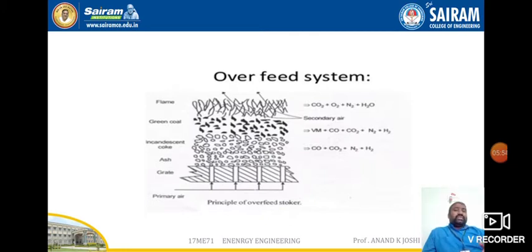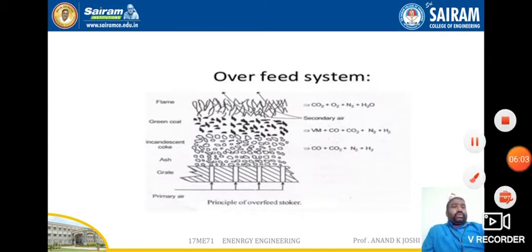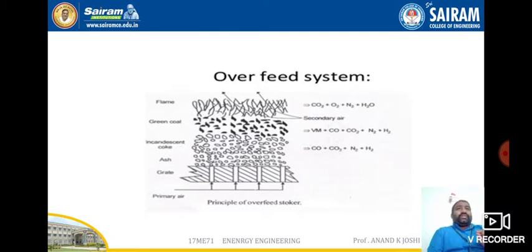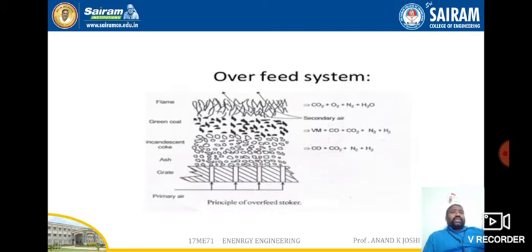Now let us discuss about the overfeed system. In this overfeed system, coal of different sizes and shapes is fed into the system. In the overfeed system, coal is fed into the grate above the point of air admission. This is used for large capacity boilers where pulverized coal is used. The combustion mechanism of an overfeed stoker works as follows: air from the fan, along with water vapor from the atmosphere, enters the bottom of the grate under pressure. As air passes through the grate, it absorbs heat from the ash and the grate itself, cooling both of them.